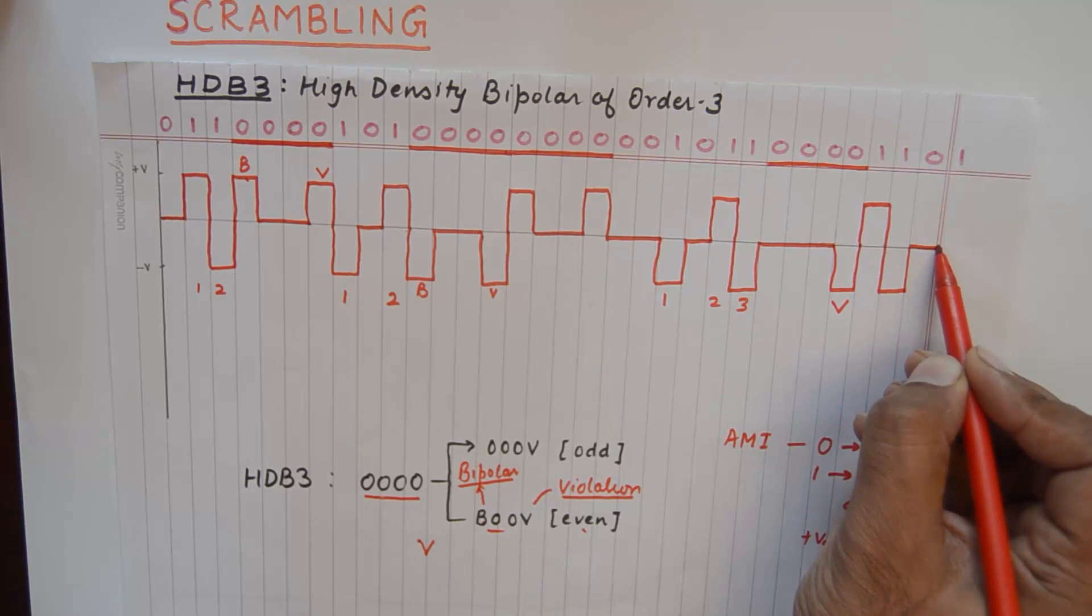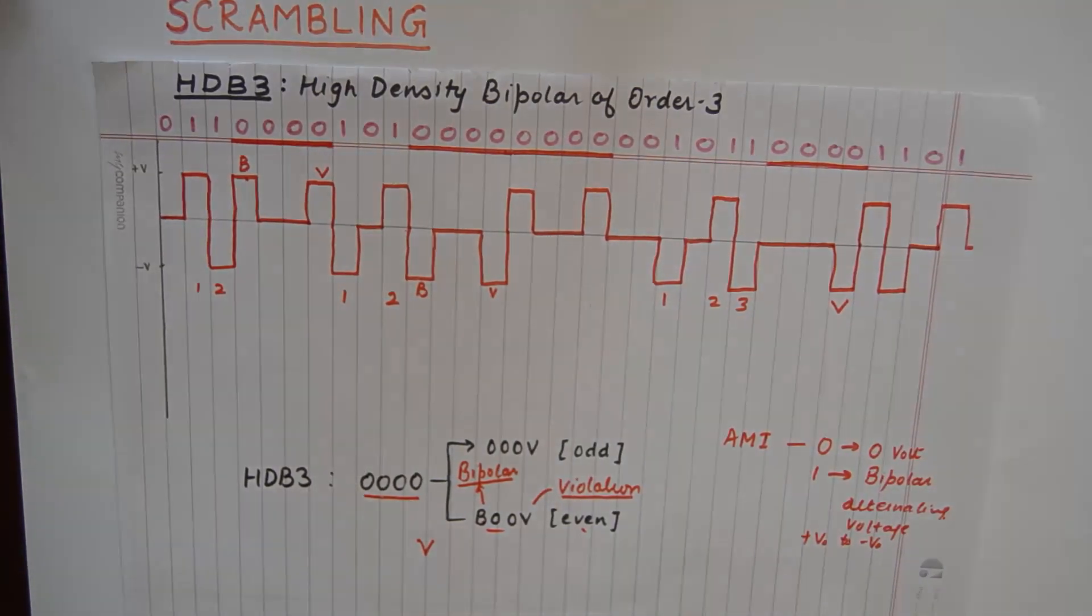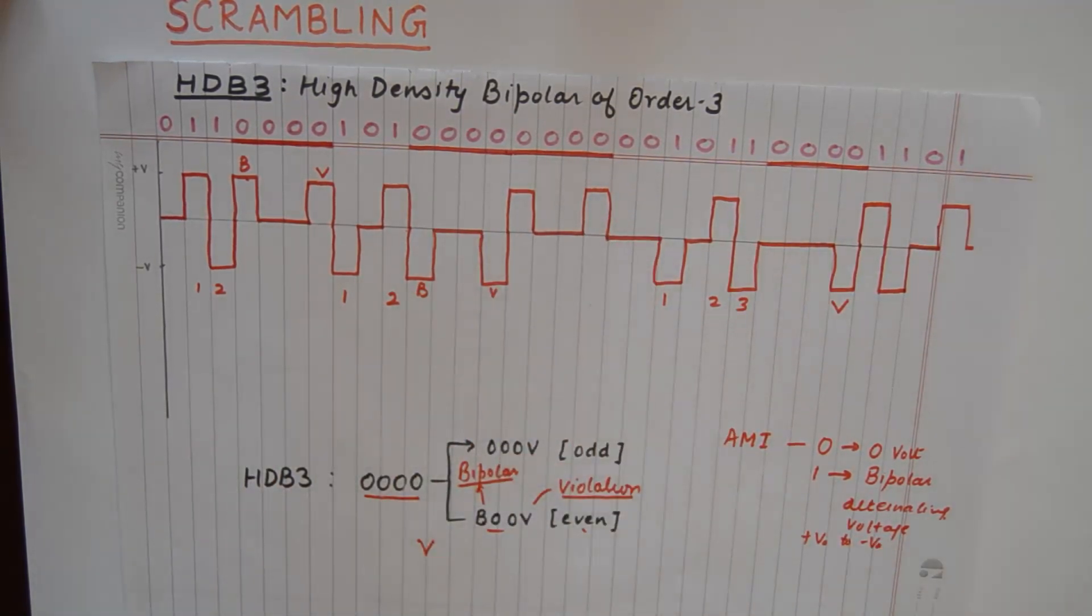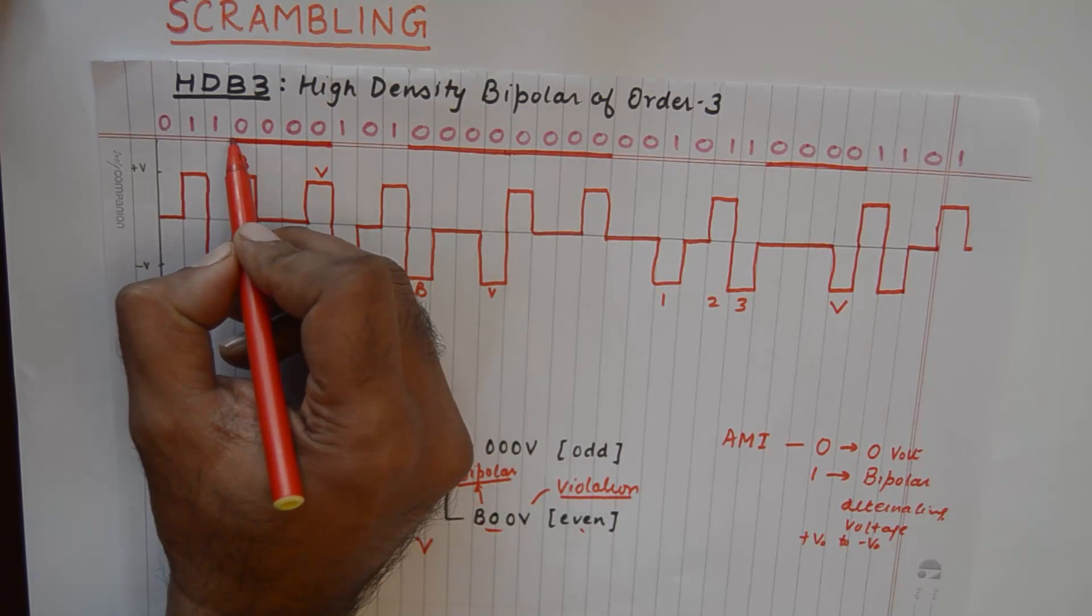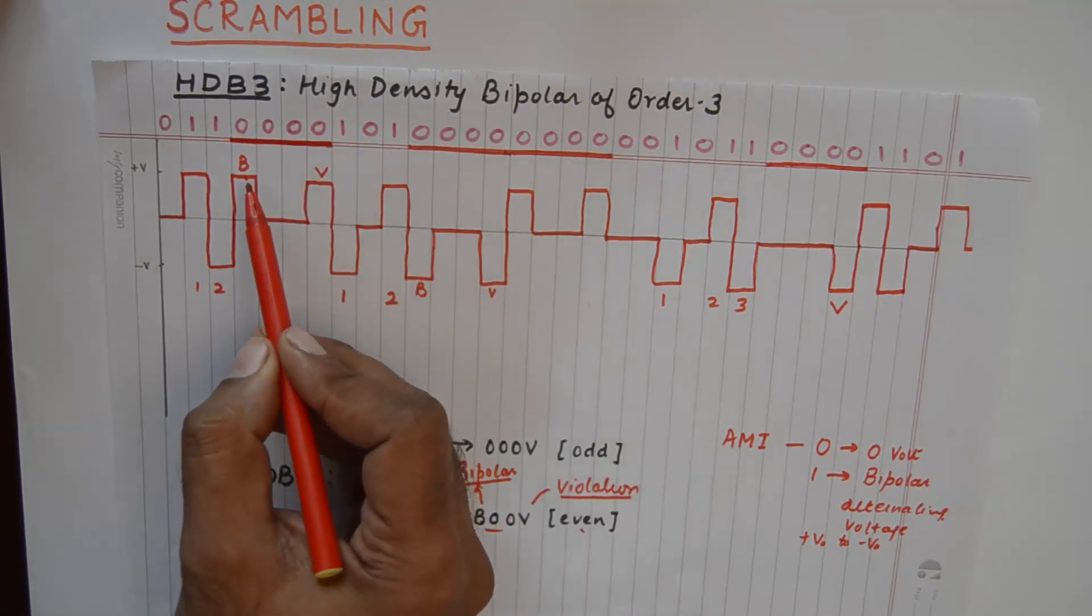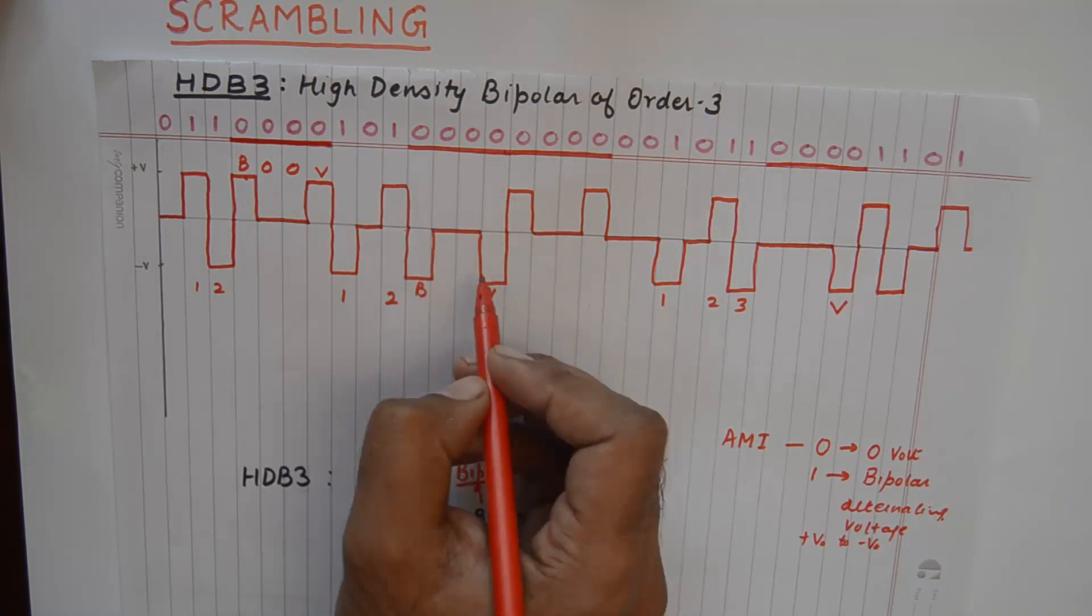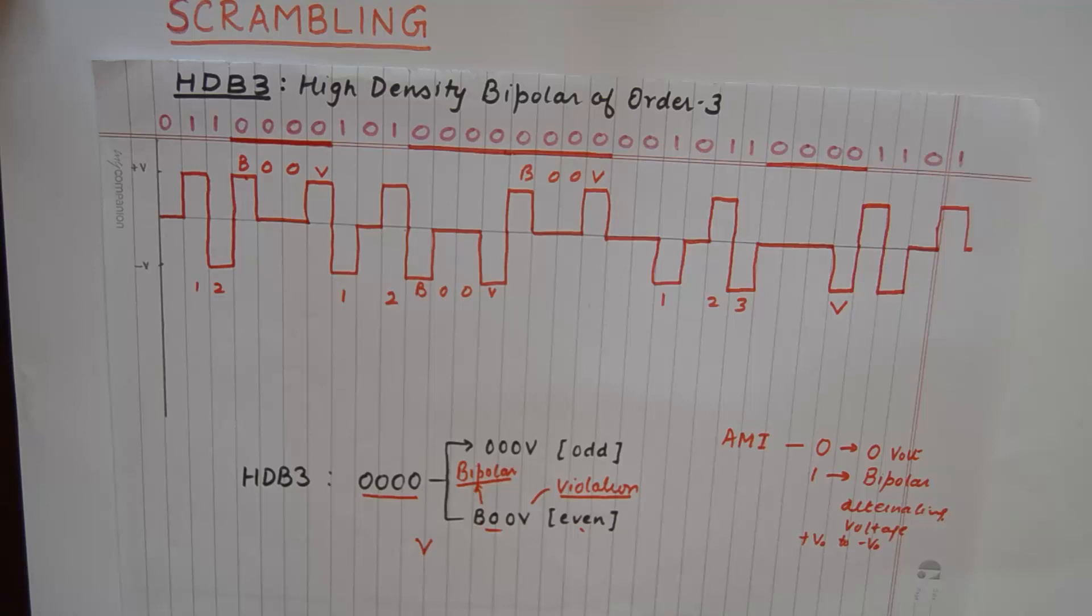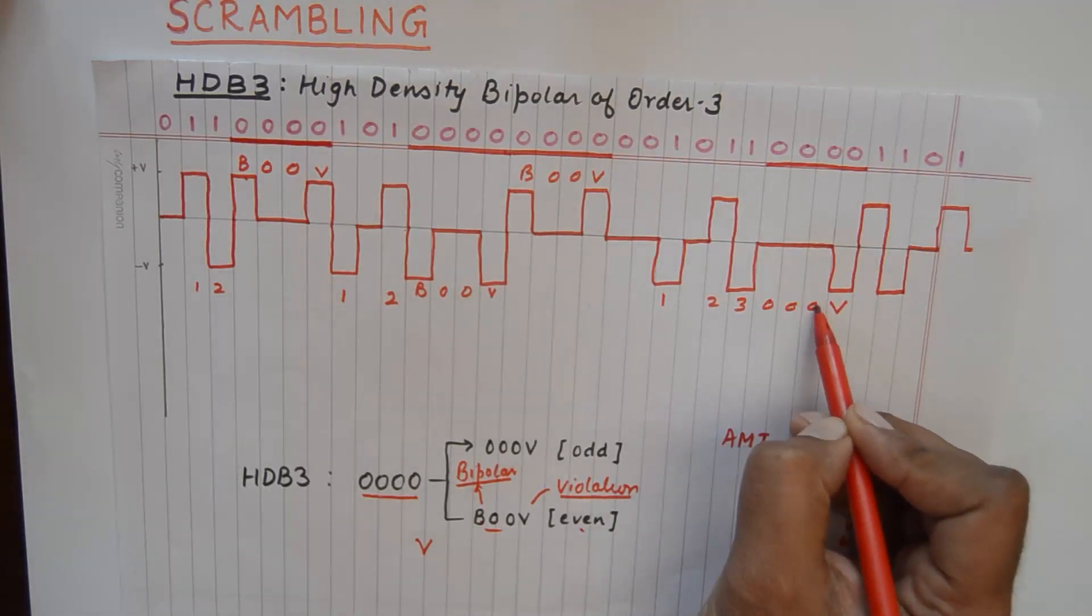And zero by a zero. And a one by an alternating voltage. In this way, as you have seen that the consecutive zeros are being taken care of. And we have encoded these four zeros by B00V. These four zeros with again a B00V. This is again encoded using B00V. And this one is encoded using 000V.